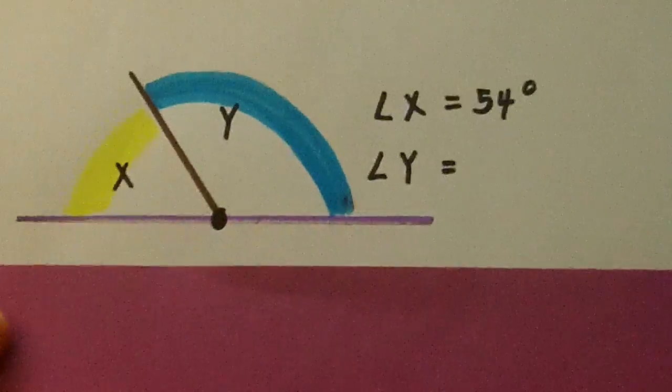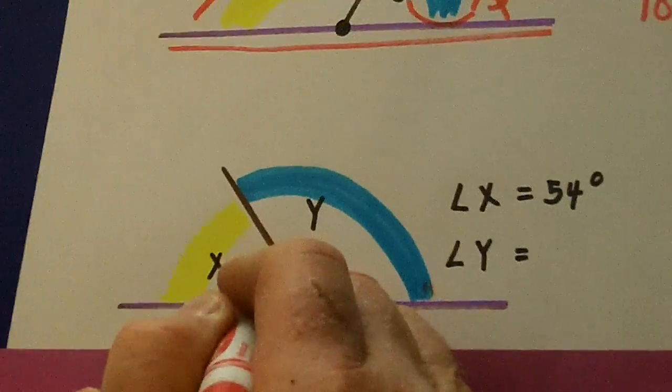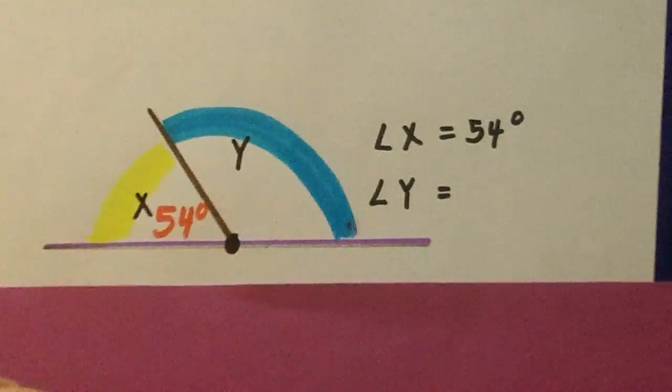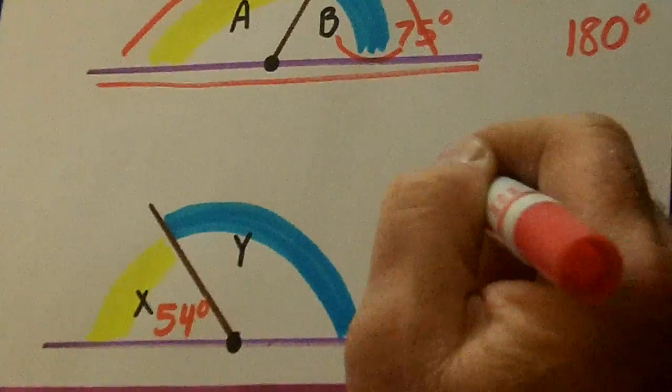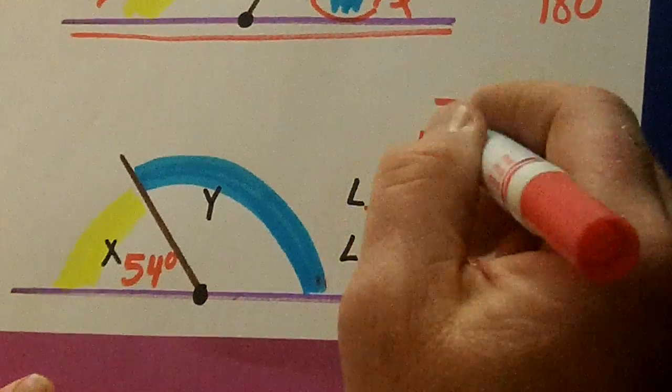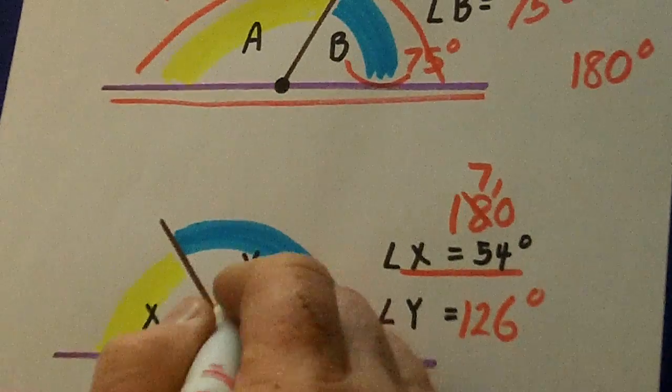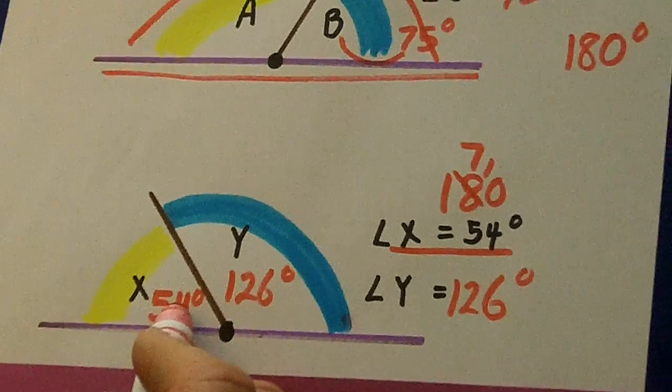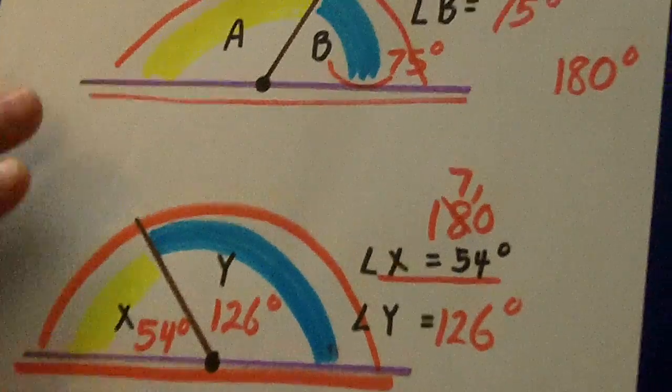Another supplementary angle right there. Now it says X is 54. So now X is the small one, Y is the big one. So we got to subtract. 180 minus 54. Let's remember to borrow. 0, 7, 10, 6, 17 minus 5 is 12, 126 degrees. So here's 126 degrees. And it's supplemental to this 54 because they both add up to 180.